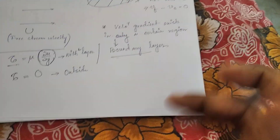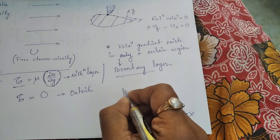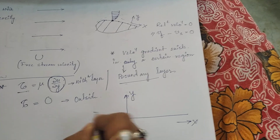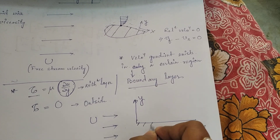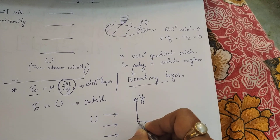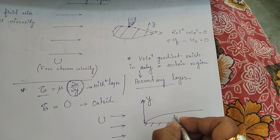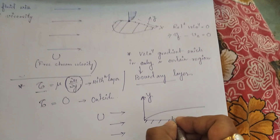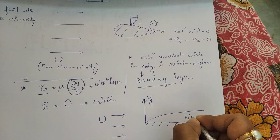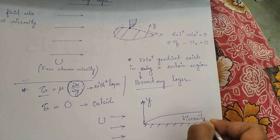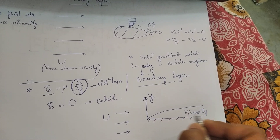Now consider a flat surface. This is our x-axis along the surface and this is our y-axis. When a fluid with free stream velocity moves along this direction past the flat surface, there exists an imaginary layer in the neighborhood of the surface. This particular layer is called the boundary layer. Within that boundary layer there is a presence of viscosity, but outside the layer viscosity can be neglected — that is, inside the layer internal friction is present but outside the layer internal friction can be neglected.